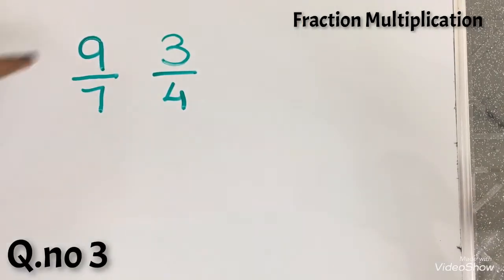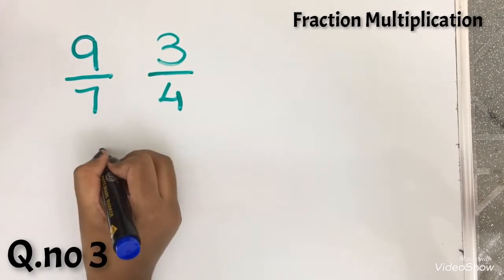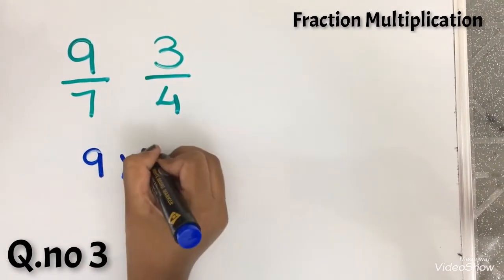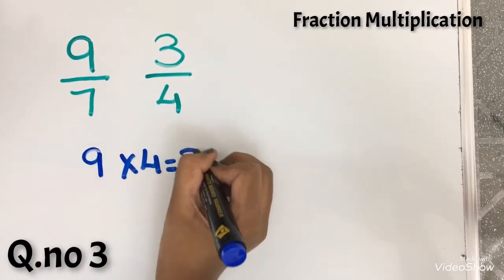Let's do the cross multiplication. So 9 into 4. 9 into 4 equals 36.